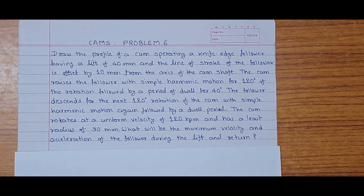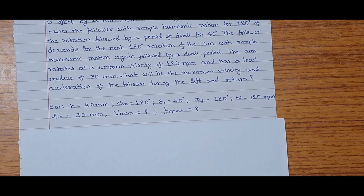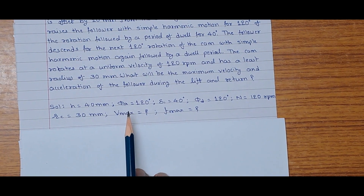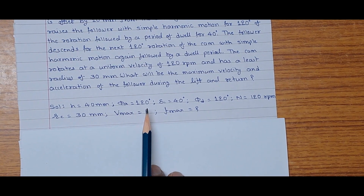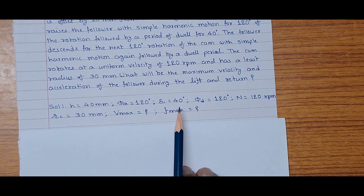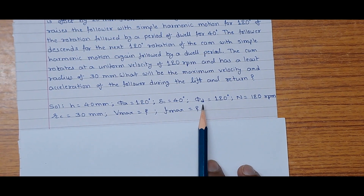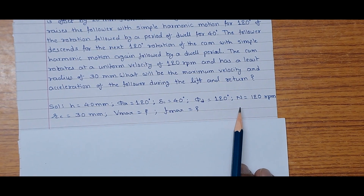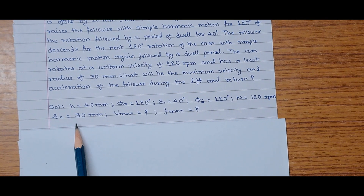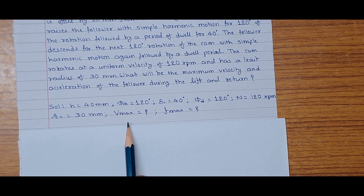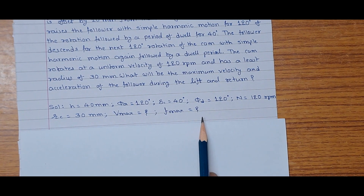Let us note down the given information. Lift h = 40 mm. The cam rotates 120 degrees during follower rise, so angle of ascent phi_a = 120 degrees. Dwell angle delta_1 = 40 degrees. Angle of descent phi_d = 120 degrees. Cam speed = 120 rpm. Minimum radius of the cam rc = 30 mm. We need to draw the profile and find maximum velocity and acceleration during ascent and descent.